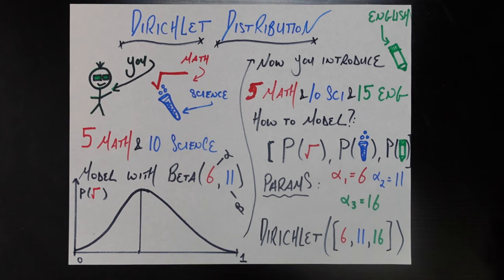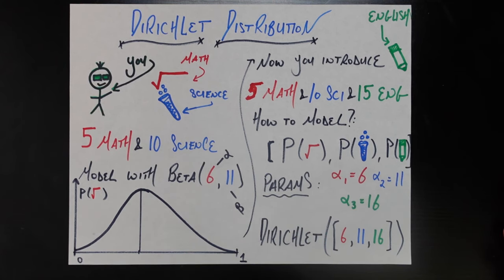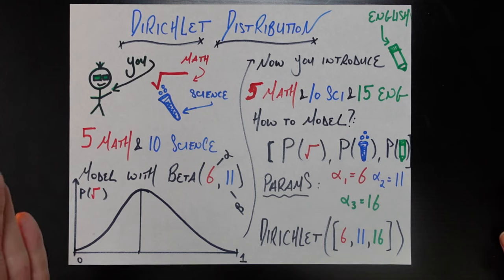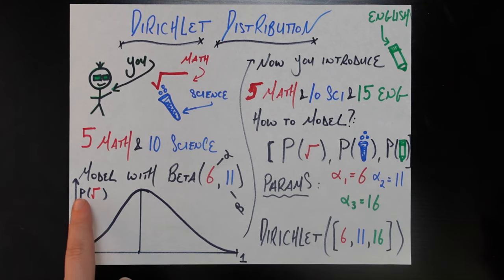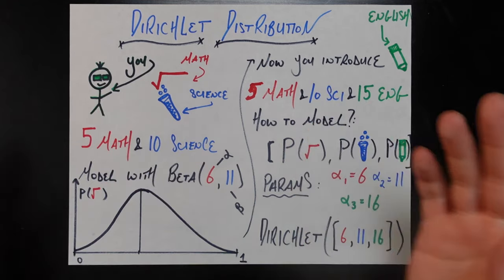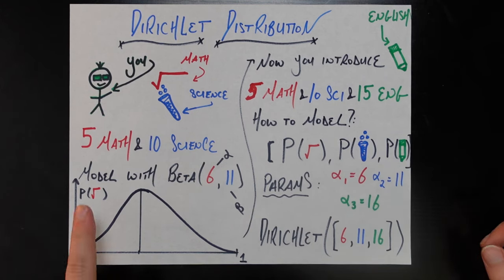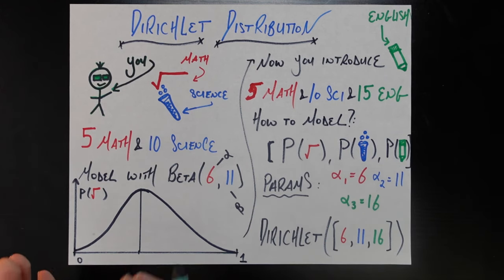Now if I draw a picture of the Beta(6, 11) distribution, it looks like this. Because it's a beta distribution, it is on the range of zero to one. We don't have any positive probability less than zero or greater than one, because the beta distribution is used to model a probability — in this case, the probability that someone would be a math major. And so that gives us a full distribution for modeling that probability.